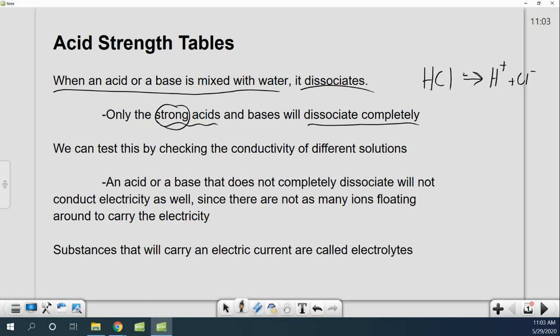Now you can test this by checking conductivity. A lot of times people are like, well, how would you measure stuff like this? How do people even know? Well, these charged particles carry an electric current. They're called electrolytes. And so you can measure how much electricity will pass through a substance and that'll let you know how much of it has fallen apart into ions. So an acid or base that does not completely dissociate will not conduct electricity as well. It won't have as many charged particles around. So strong acids would be very conductive because they have lots of electrolytes. Weak acids and bases would not because they have less electrolytes.